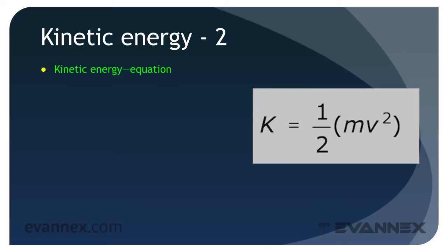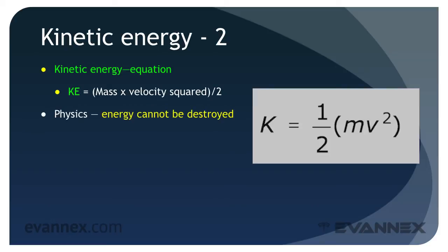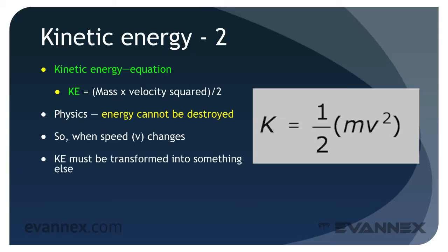Represented as a mathematical equation, kinetic energy equals one half mass times velocity squared, typically measured in joules. From your high school physics class, you may recall that energy cannot be destroyed. So what happens when the speed of an object of a given mass changes? The object's kinetic energy must be transformed into something else. And it's this last observation that lies at the core of regenerative braking.